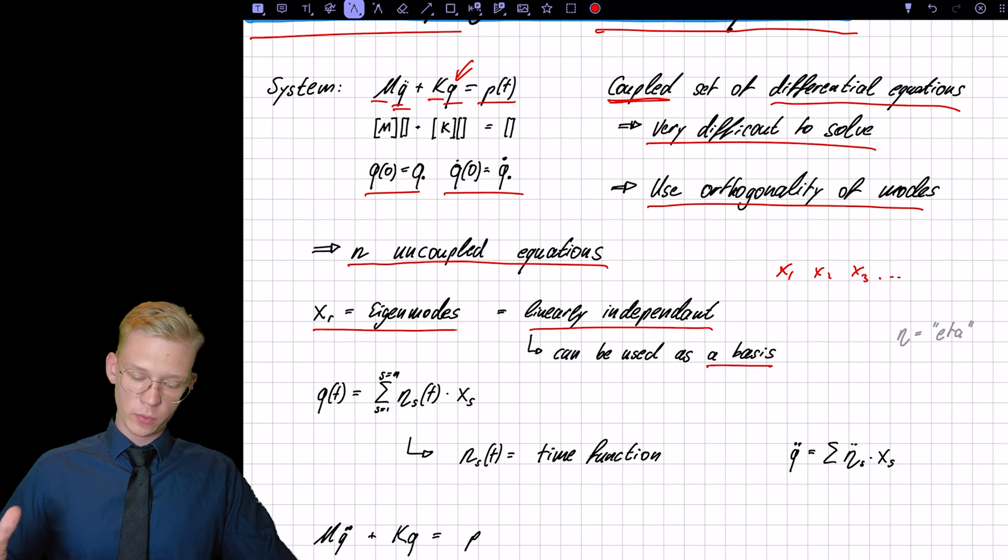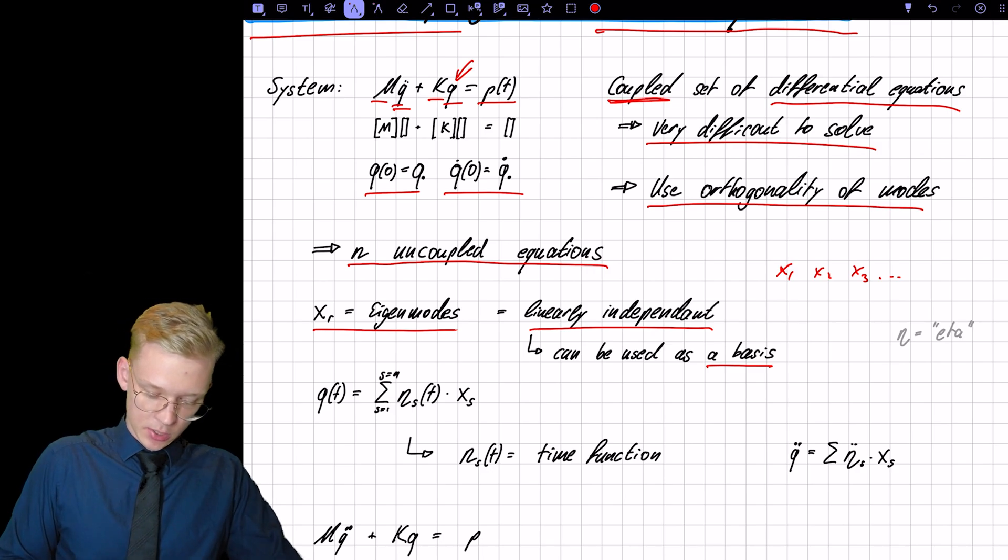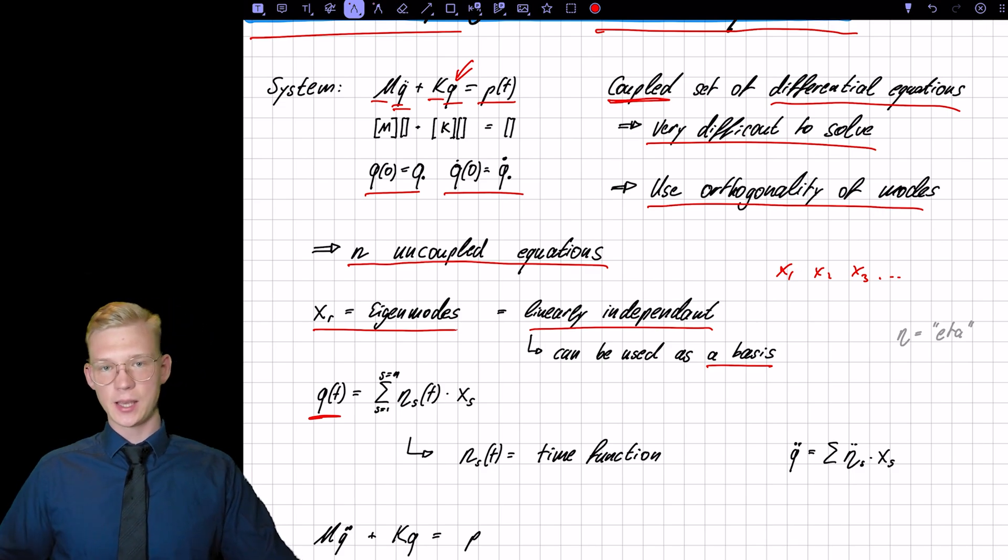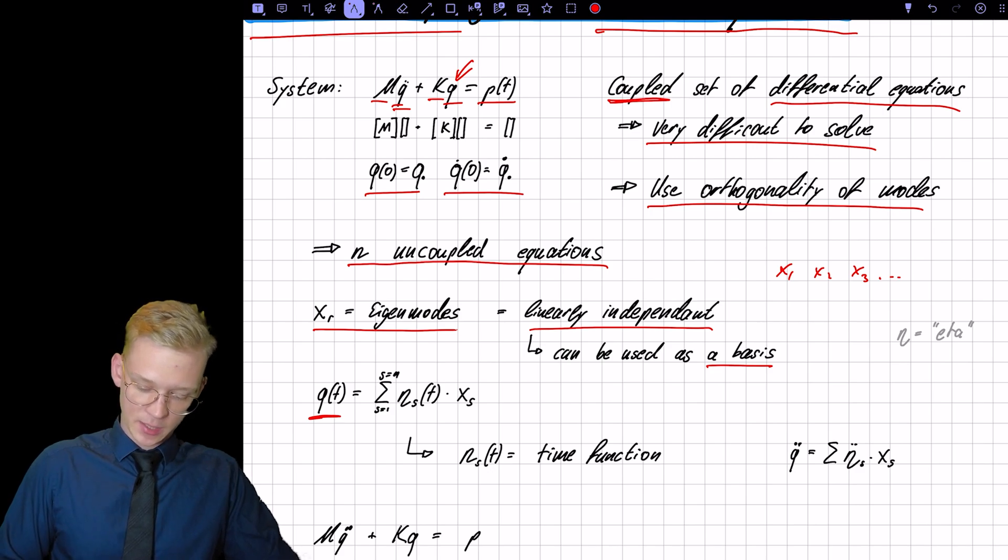And we will now define our solution. So we have our Q that is basically just a sum of those eigenvectors pre-multiplied with a time function. So we have our eta, that is our time function.